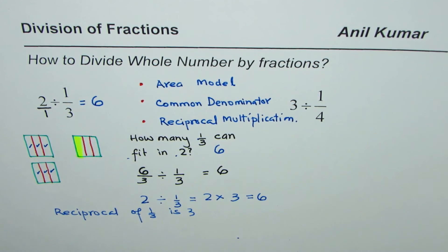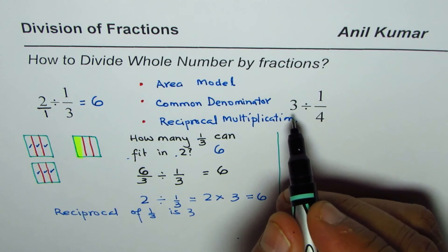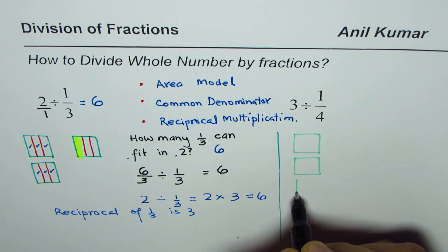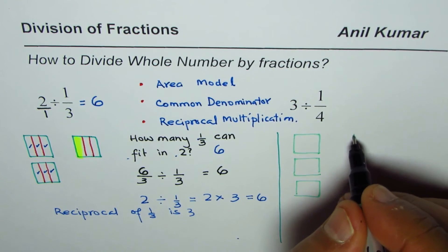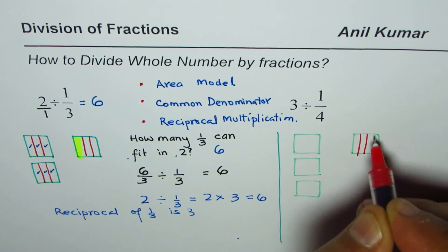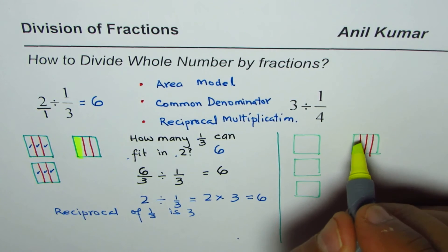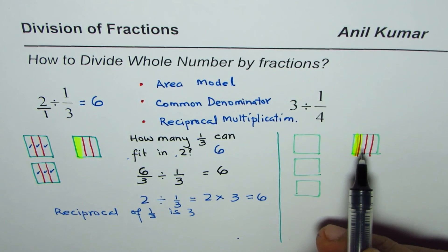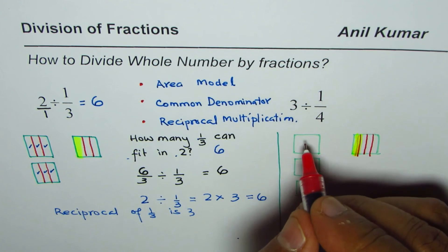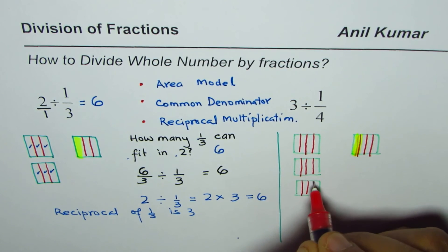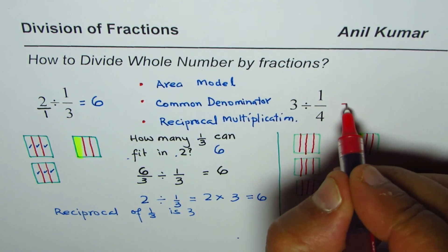Now let's quickly apply all three strategies to 3 divided by 1/4. For the area model, we make three wholes — one, two, and three — and one rectangle for one-fourth divided into four equal parts, shading one. The question is: how many one-fourths can fit into three? We divide all three rectangles into fourths and count: 4, 8, and 12. The answer is 12.